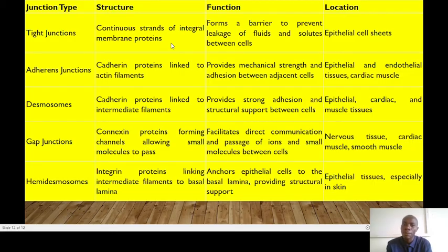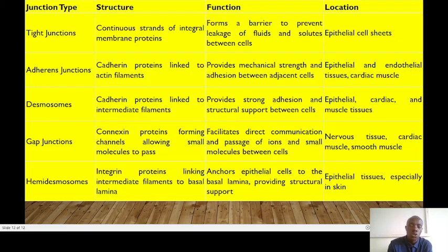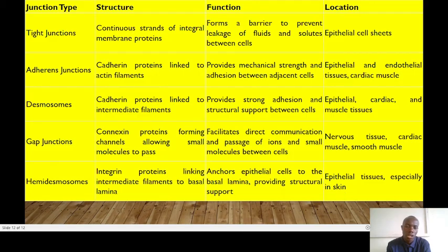In terms of location: tight junctions are found in epithelial cell sheets; adherent junctions in epithelial and endothelial and cardiac muscle cells; desmosomes in epithelial, cardiac, and muscle tissues; gap junctions in nervous tissue, cardiac muscle, and smooth muscle. Hemidesmosomes are found in epithelial tissue, especially in the skin — from the epidermal layer into the dermis at the basement layer, the stratum basale — anchoring those different layers.